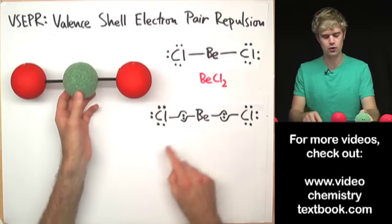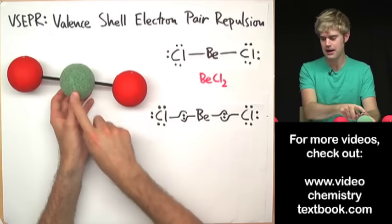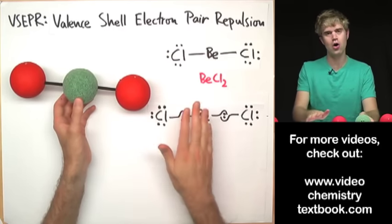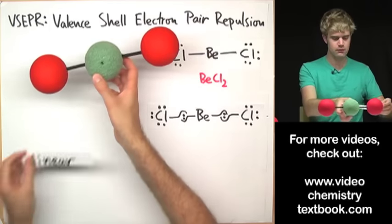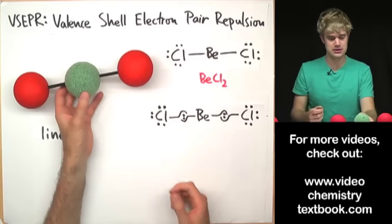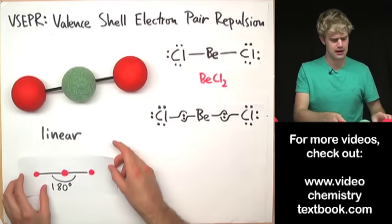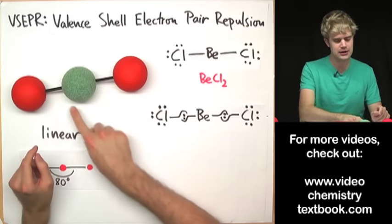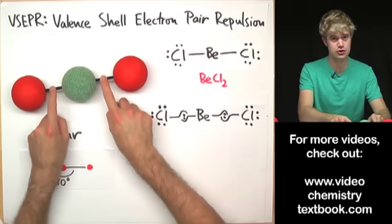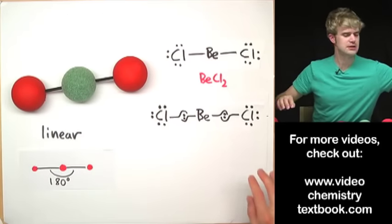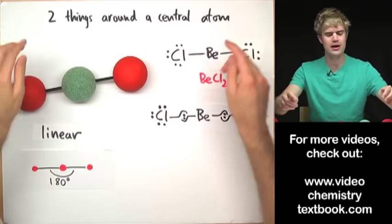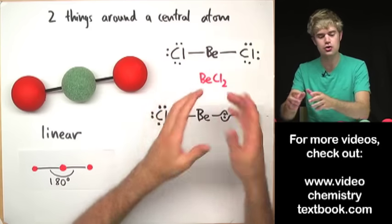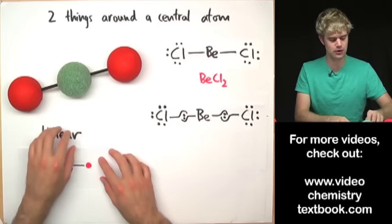The three-dimensional shape of beryllium dichloride is going to look like this: we have beryllium in the middle and the two chlorines on either side, and all three atoms form a line — they're all in a straight row. We call this a linear molecule. The angles between these two bonds are going to be 180 degrees. So 180 degrees between the two bonds is how the electrons in these bonds can be as far away from each other as possible. This linear shape is the way that two things arrange themselves around a central atom.